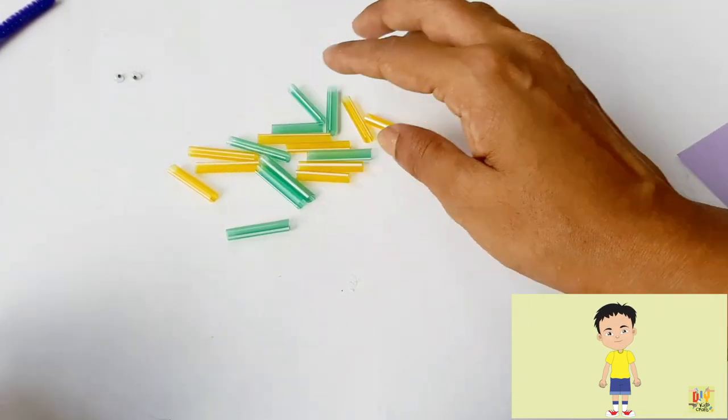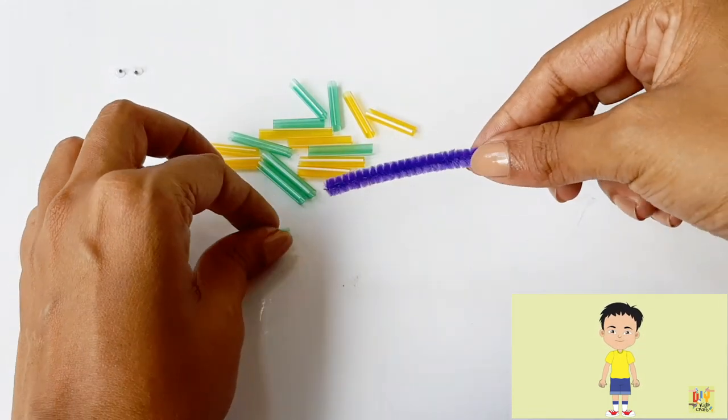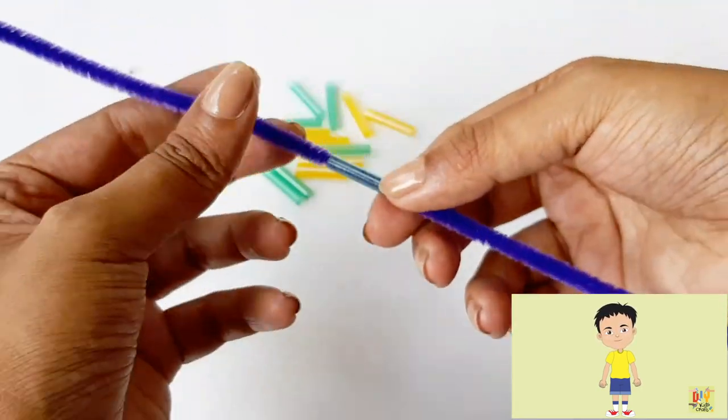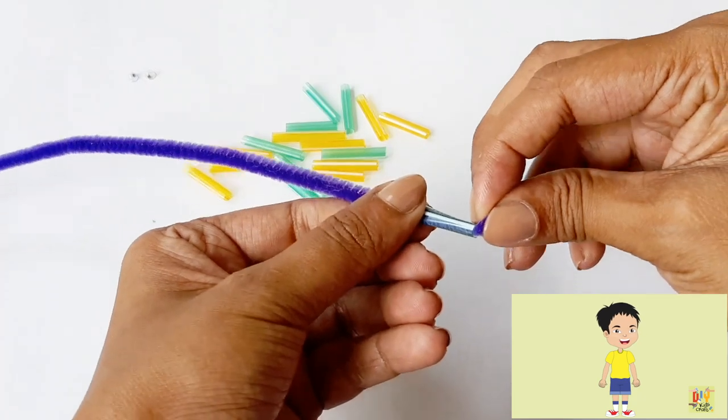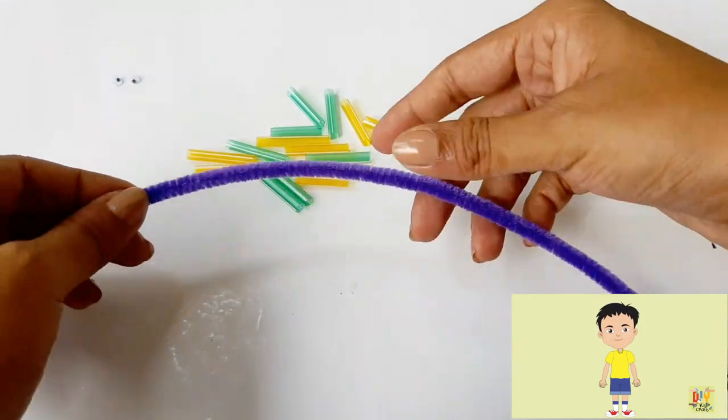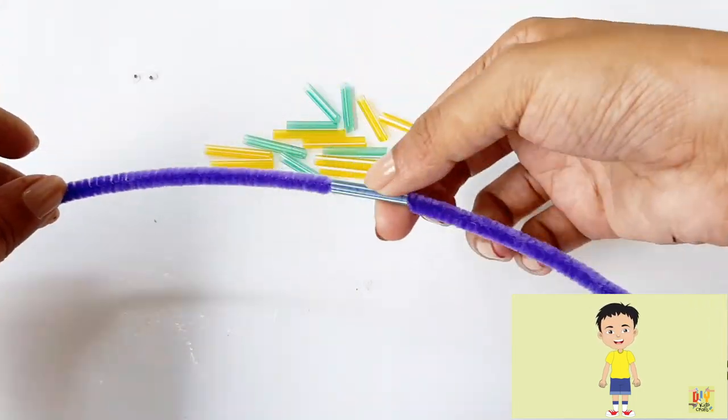Alright, after cutting the straws, get your fuzzy wire. This will be the body of our snake. We will place the cut straws on the fuzzy wire. You can use different colors of straws for our snake.